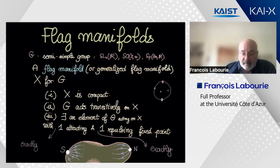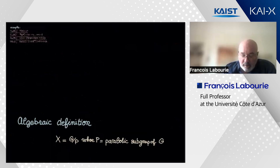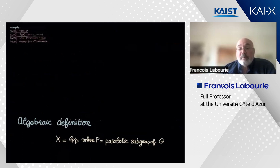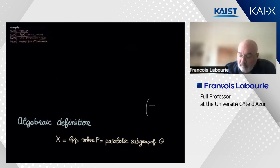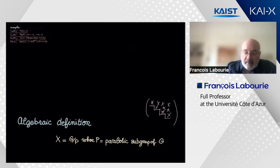There is also a useful algebraic definition: X is G/P where P is a parabolic subgroup of G. In the context of SL(n,R), a parabolic subgroup corresponds to a block upper-triangular subgroup.